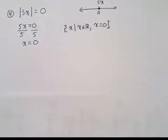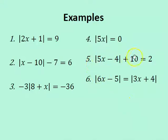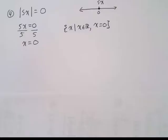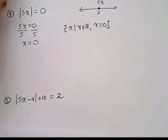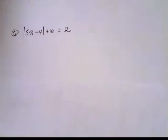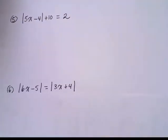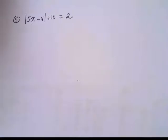For the second or fifth equation that we have here, absolute value of 5x minus 4 plus 10 equals 2. Let's copy that down. Once again we're going to use the same strategy that we have, which is isolate the absolute value, set up two equations, and solve.